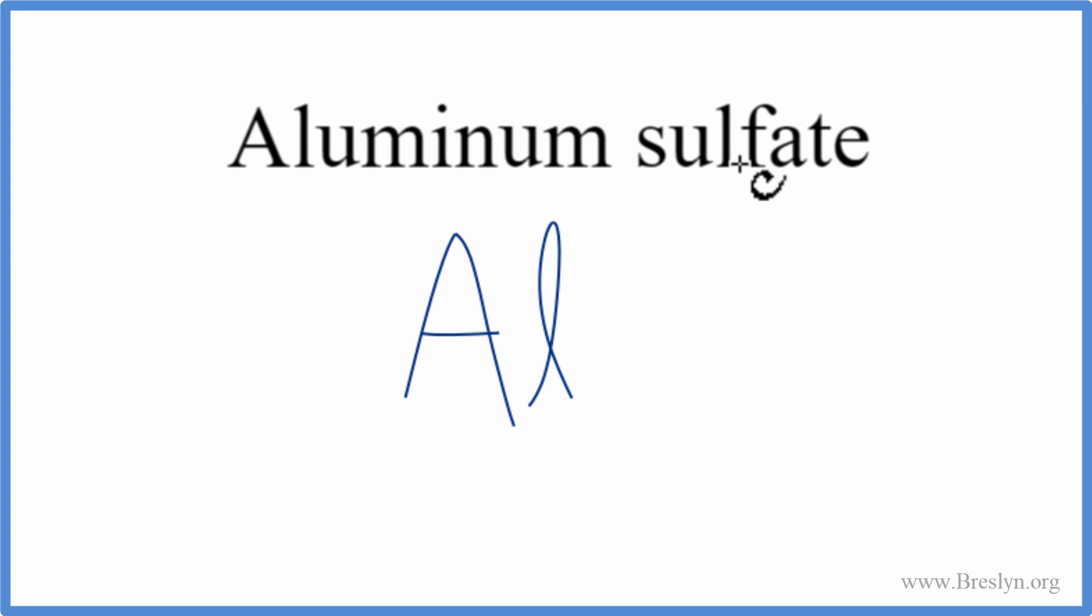And sulfate we won't find on the periodic table, we see it ends in A-T-E. Sulfate is a polyatomic ion, so we look this up on a table of common polyatomic ions, and we see sulfate is SO4, 2 minus.